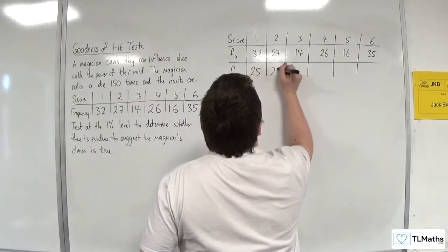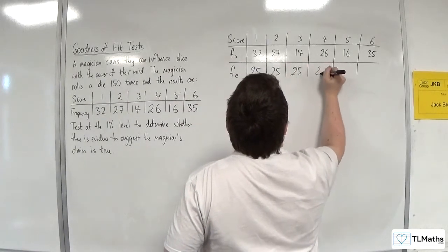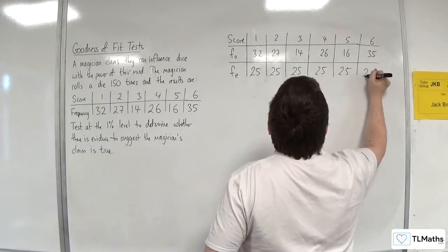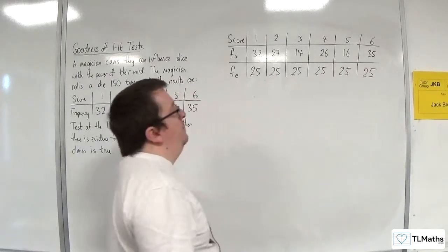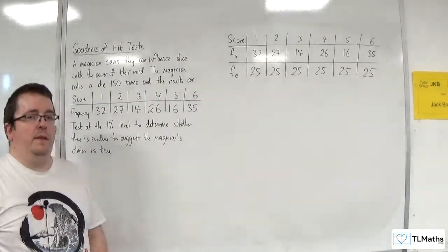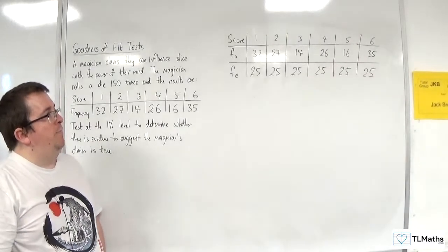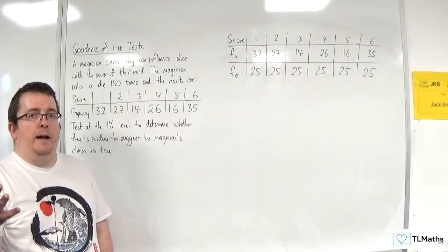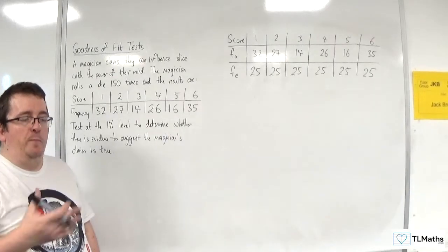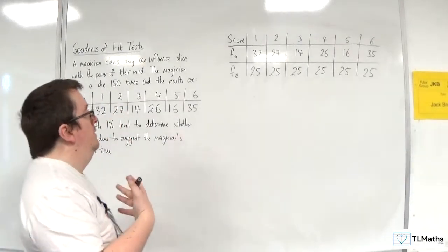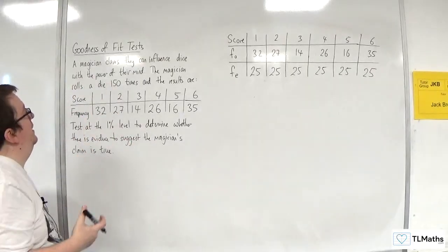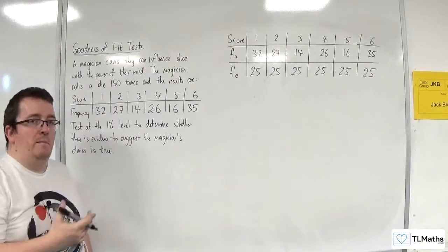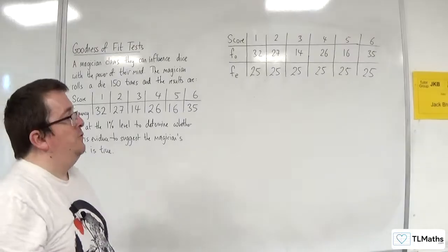Now, granted, if you got 25 of each, you would probably think that's a bit odd. Okay, that's a bit weird. But that would be the expected frequency if this was completely independent and there was no such thing as this power of their mind influencing the scores, the results.